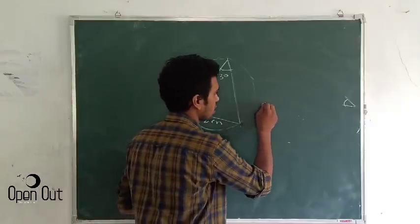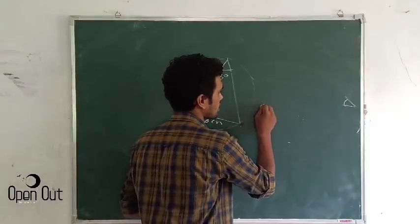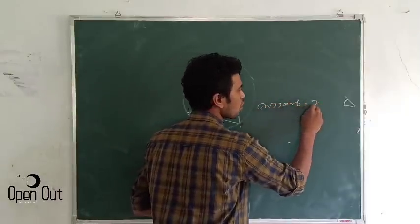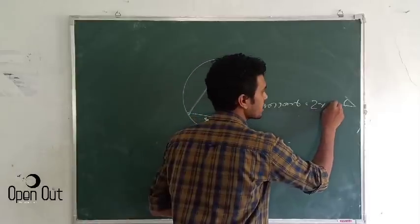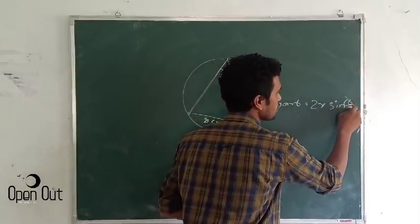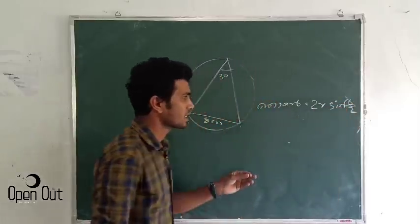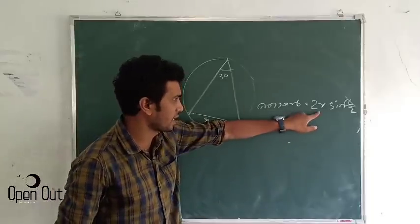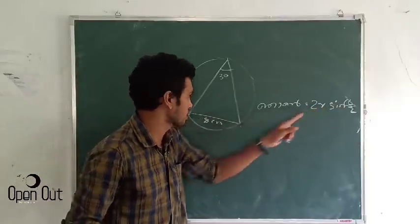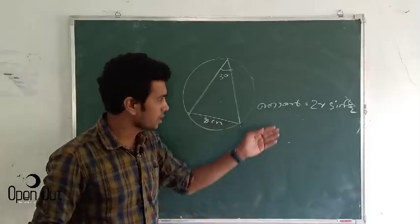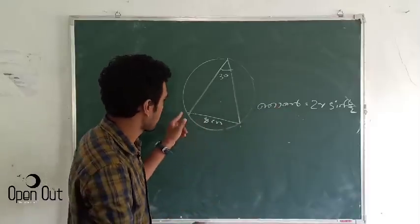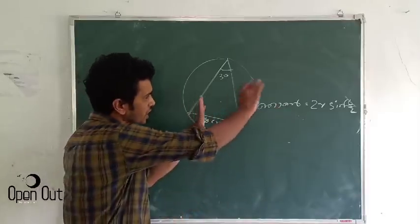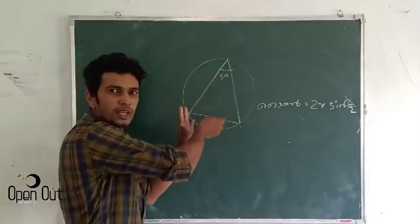Let's take a look at the diameter of this circle. The diameter of a circle is equal to 2r sin(C/2). If you want to see the radius of this circle, it is radial during the circle.